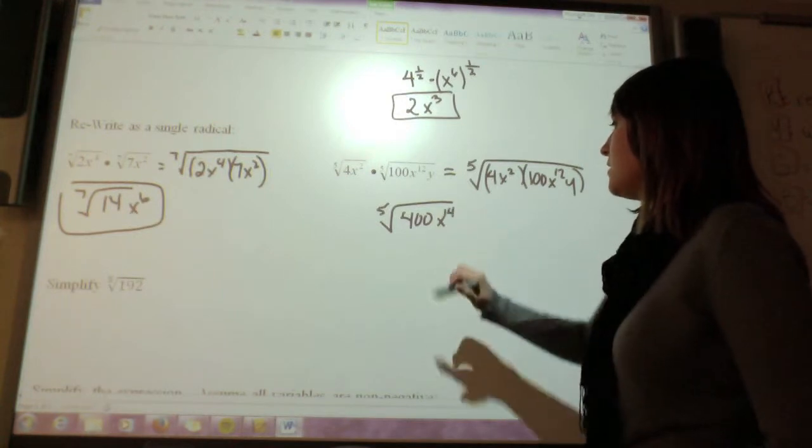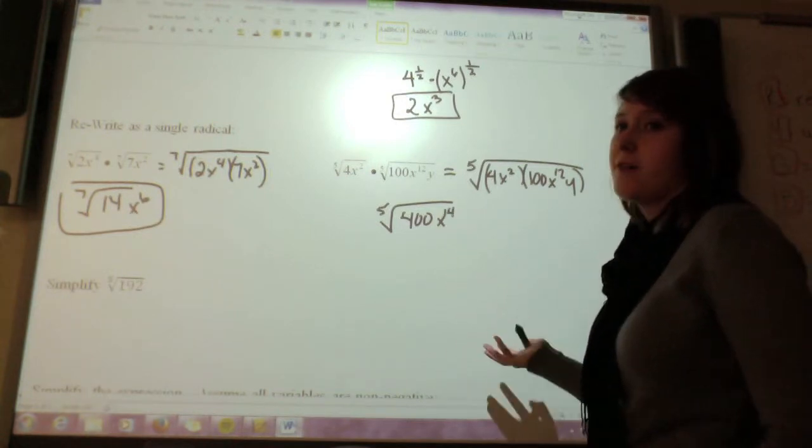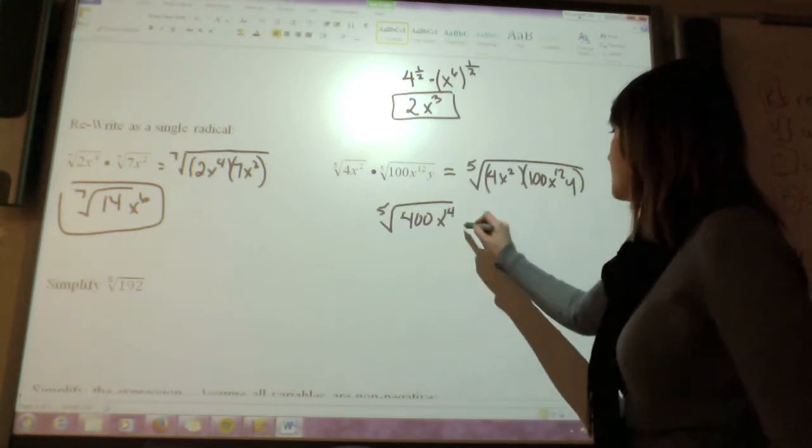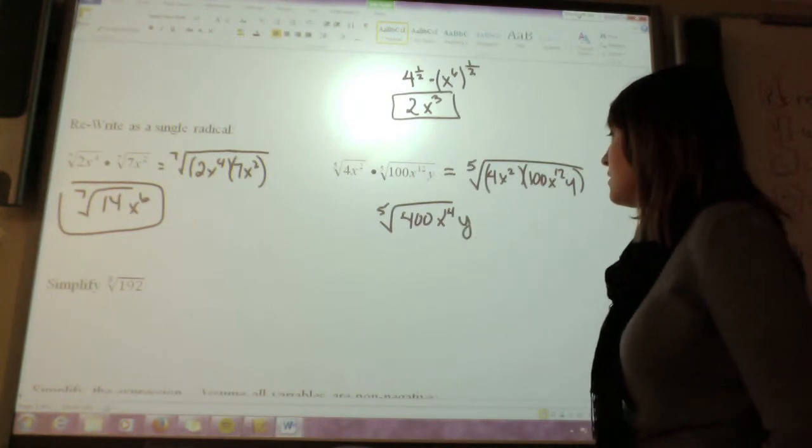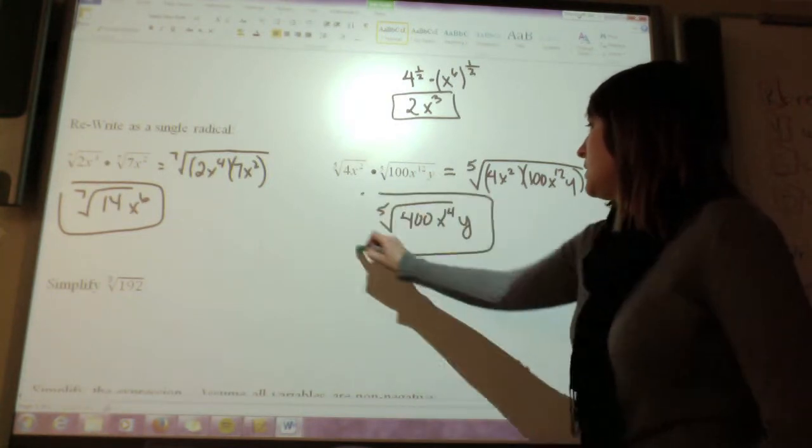If I take x squared times x to the twelfth, that gives me x to the fourteenth. Again, if I'm multiplying those bases, I have to add the exponents. And then I've got this y here. Okay, so that is my answer.